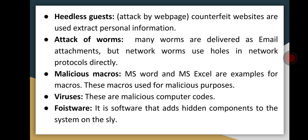The next one is attack by worms. Many worms are delivered as email attachments. In most cases, a firewall will block system worms. Many of these system worms install trojans and then begin scanning the internet from the infected computer, looking for other computers connected to the internet to infect. If the worm is successful, it propagates or spreads rapidly.